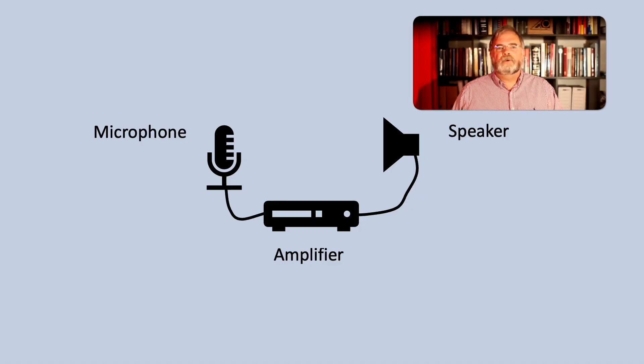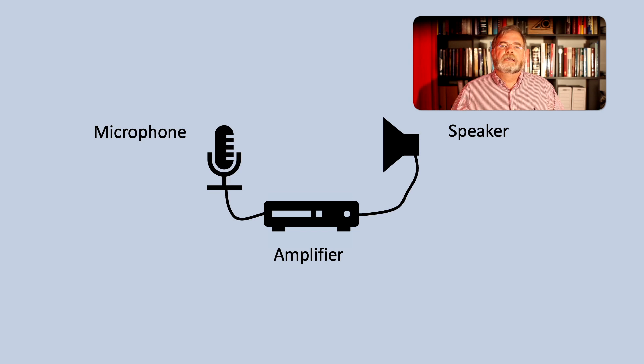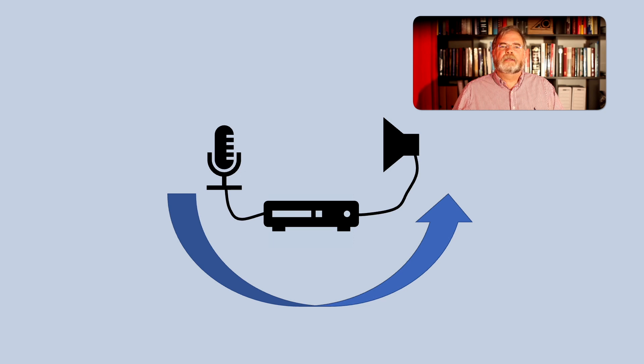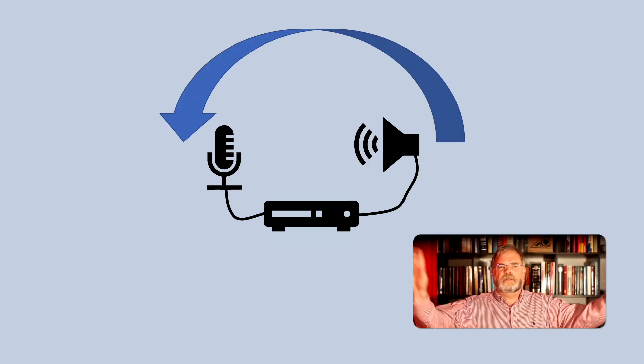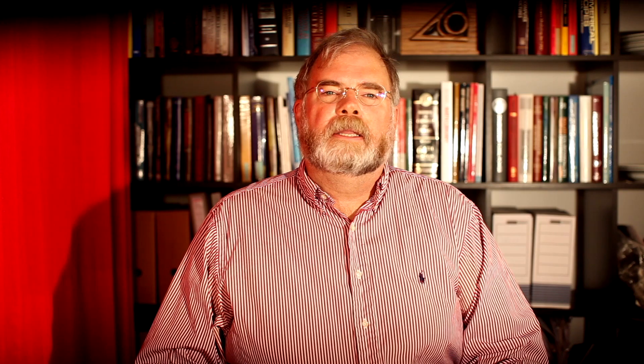The easiest way to explain this in simple terms is with an example that most people will have experience with. Consider a microphone, amplifier, and speaker. Most environments have some low ambient levels of noise, which cover a wide range of frequencies. This ambient sound is picked up by the microphone, amplified, and fed to the speaker, which then radiates the sound back into the environment. The microphone picks up the sound coming from the speaker in addition to the ambient sound, and feeds this back through the amplifier to the speaker again.